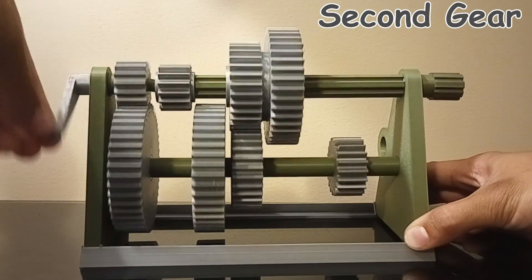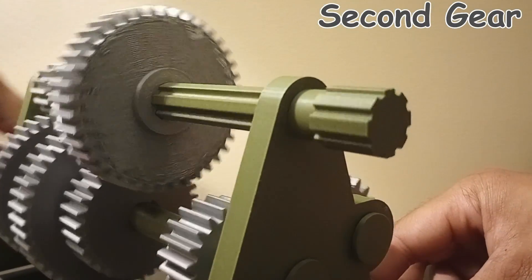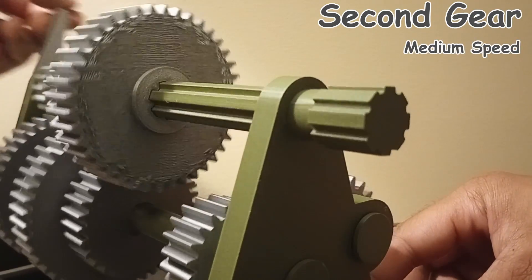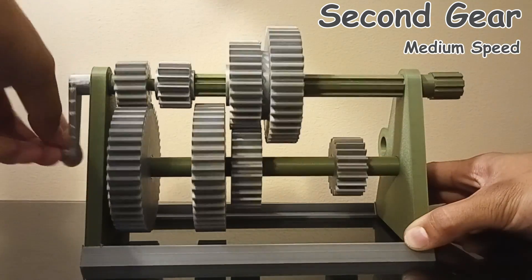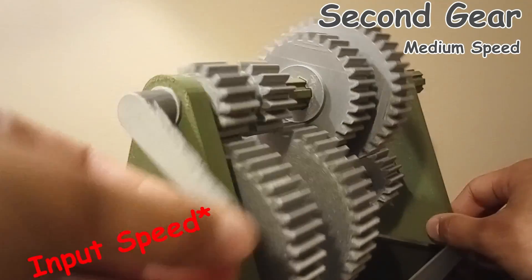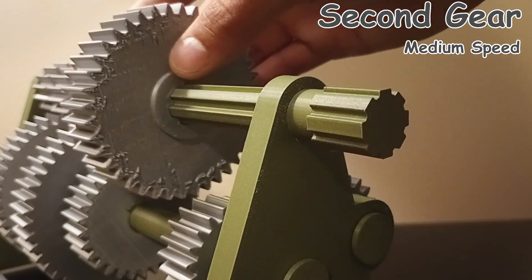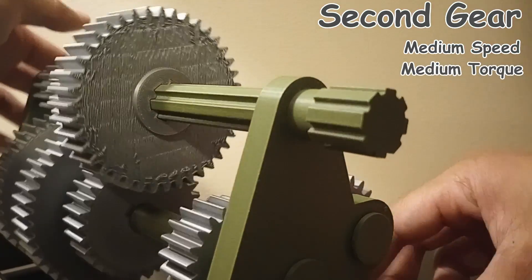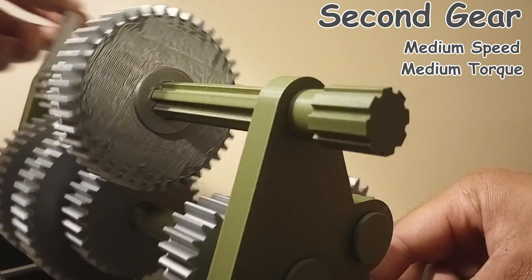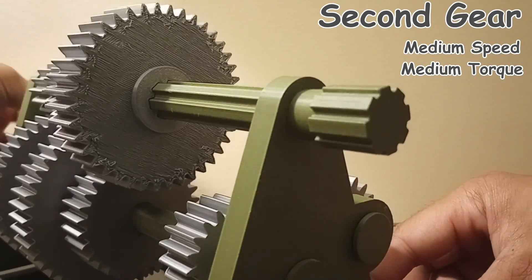Second gear. Shifting into second gear, we can see that the output is a step up in speed compared to the first gear, but still slower than the input speed. On the contrary, second gear will be a step down in torque compared to that of the first gear, but still with greater torque than the input.